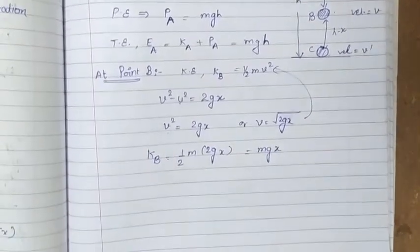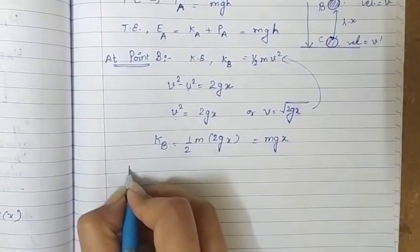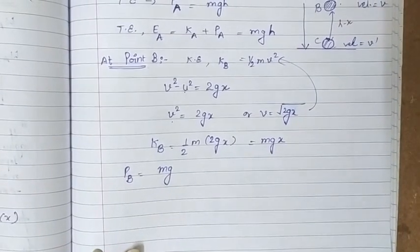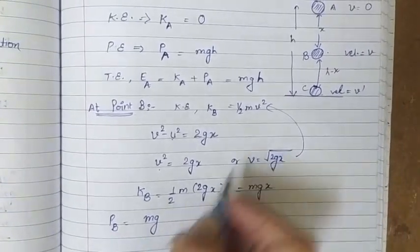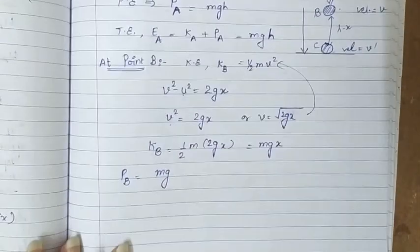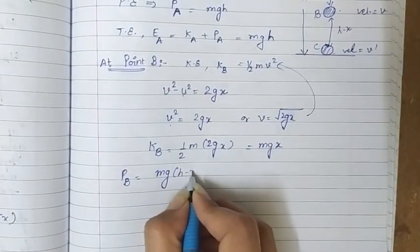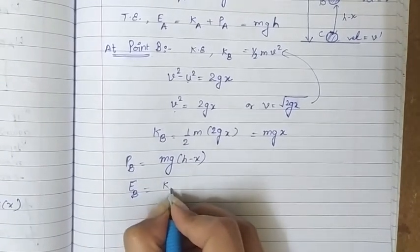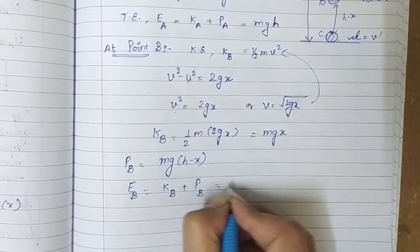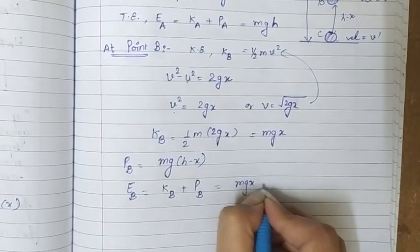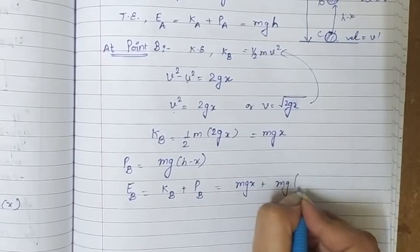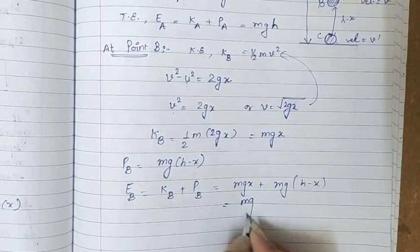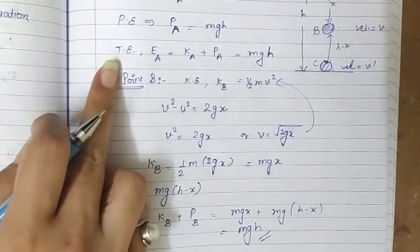Now the potential energy at point B — the height from the ground at point B is h minus x — so potential energy at B is mg(h minus x). Total energy at point B is kinetic energy plus potential energy at B, which equals mgx plus mg(h minus x). Solving this, the mgx terms cancel out and the answer we get is mgh — the same result as at point A.